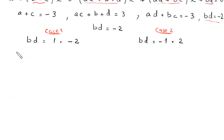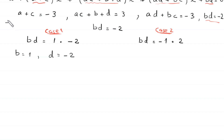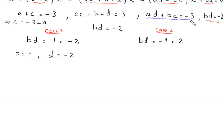For Case 1, b = 1 and d = -2. From the equation a + c = -3, we get c = -3 - a. Now substituting into the equation ad + bc = -3.